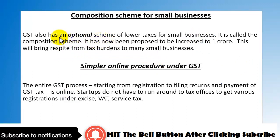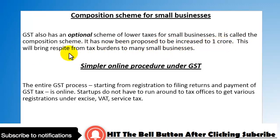What is the composition scheme? GST has an optional scheme for lower taxes for small businesses called the composition scheme. It has been proposed to be increased to 1 crore turnover limit, bringing relief from tax burden to many small businesses.